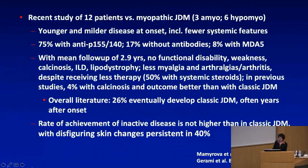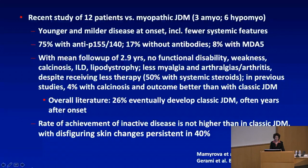A recent study of 12 patients compared amyopathic and hypomyopathic JDM to myopathic JDM. Findings showed younger and milder disease at onset, fewer systemic features. 75% had anti-p155-140 (anti-TIF-1 gamma), 17% without antibodies, and 8% had MDA5 antibodies. Followed for a mean of about three years, there was no functional disability, weakness, calcinosis, interstitial lung disease, or lipodystrophy overall, with less myalgia and arthralgia despite receiving less therapy — 50% had received systemic steroid.